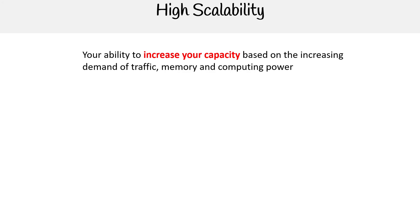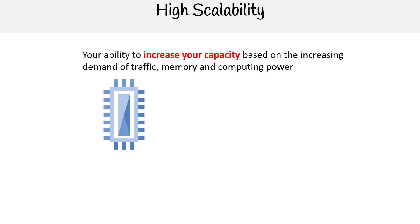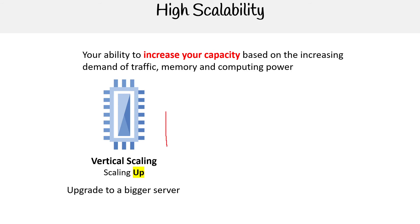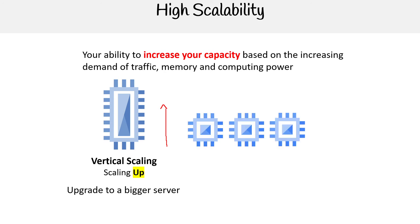Then you have the idea of being highly scalable — your ability to increase your capacity based on increasing demand of traffic, memory, and computing power. You have vertical scaling, where you scale up by increasing the size of a single machine — maybe increasing the amount of storage, compute, things like that, resizing the machine. Then you have horizontal scaling, where you simply add additional servers of the same size and distribute the workload across those machines.